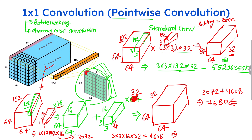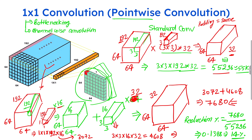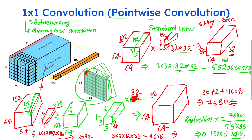So 7,680 parameters from the 1x1 plus 3x3 approach, versus 55,296 from standard convolution. The reduction percentage is 7,680 divided by 55,296, which is approximately 0.1388 — about 14%. So what we achieved with 55,000 parameters in standard convolution can be achieved with just 14% of those parameters, around 7,680 parameters. This is the advantage of 1x1 convolution over standard convolution.